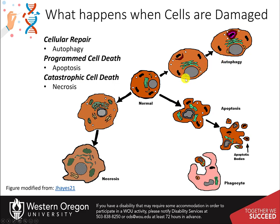If damage is too much for the cell to recover from, but maybe it's not enough to cause outright necrosis or catastrophic cell death, it may be targeted for programmed cell death. This is a safety mechanism for multicellular organisms to help ensure that damaged cells do not alter or hinder normal cellular function within the organism. Apoptosis is one example of programmed cell death that we will focus on in the next lecture.